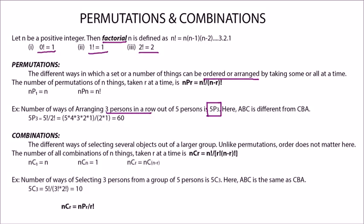So nPr is equal to n factorial by (n-r) factorial. So 5P3 will be 5 factorial by 2 factorial that is 60. nP1 is n and nPn is n factorial.